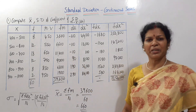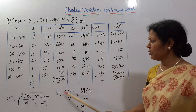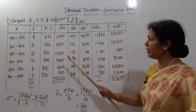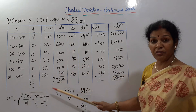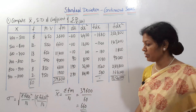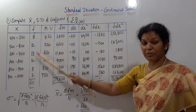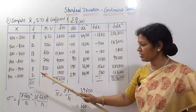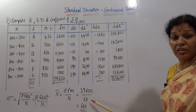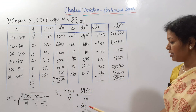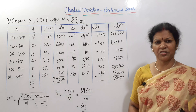X-bar equals sigma FM by N. The FM total is 39,600 and N (frequency total) is 60. So 39,600 divided by 60 gives x-bar equal to 660.